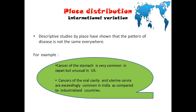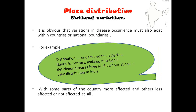For international variations: cancer of the stomach is common in Japan but not in the US. Oral cancers are common in India compared to western countries. For national variations: some areas are endemic for diseases like fluorosis, goiter, malaria, and nutritional deficiency — which are very prevalent in certain parts of our country. For example, fluorosis is endemic in areas of Kerala such as Alappuzha and Palakkad.